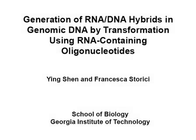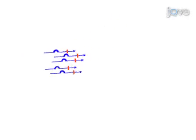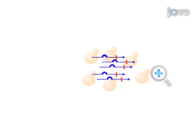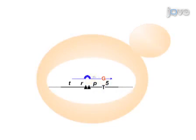The overall goal of the following experiment is to generate RNA-DNA hybrids at the chromosomal level in live yeast cells by transforming the yeast cells with RNA-containing oligos. This is achieved by introducing a single-strand RNA-containing oligo into dividing yeast cells. The oligo will then anneal with the complementary region of a mutated marker gene located on a yeast chromosome to form an RNA-DNA hybrid.